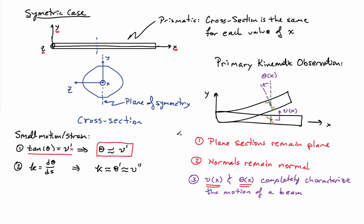Another useful quantity is the curvature of the beam. The curvature is the rate of change of the rotation of the beam as a function of arc length along the beam. For small deformations, arc length equals position x, so the curvature kappa is just the derivative of the rotation field, or equivalently the second derivative of the deflection field. These kinematic relationships will be essential as we develop a full theory for bending behavior of beams.